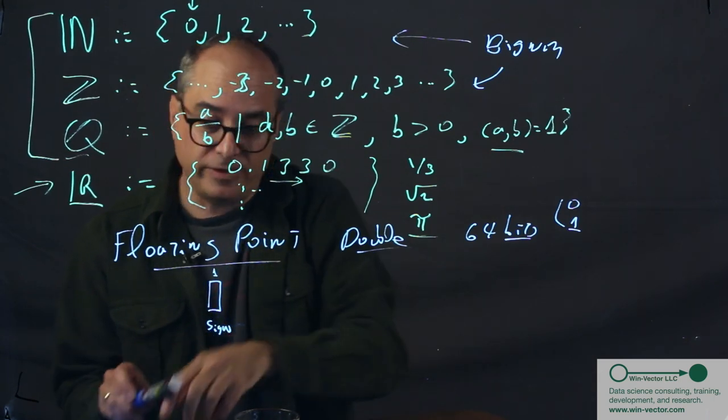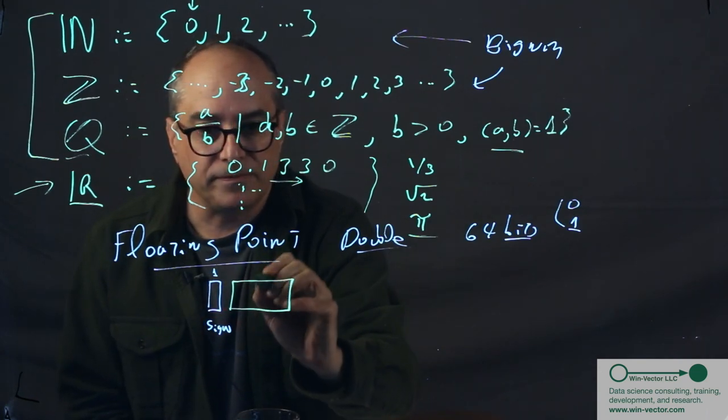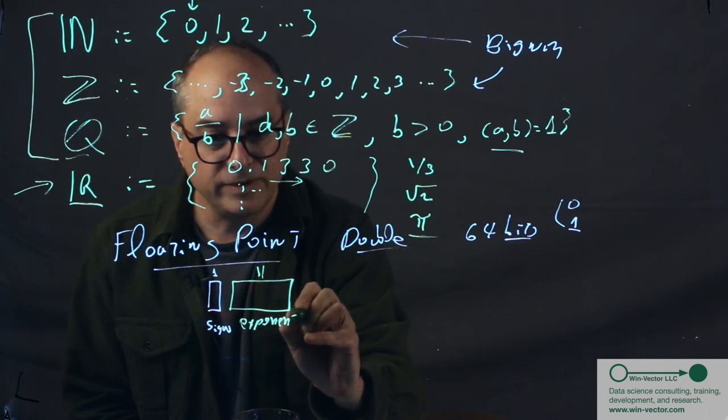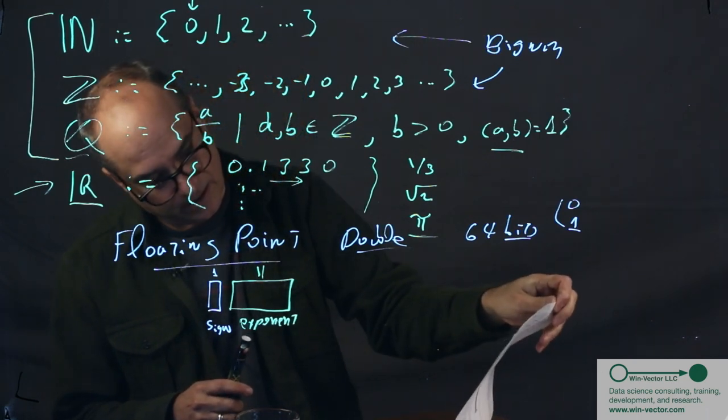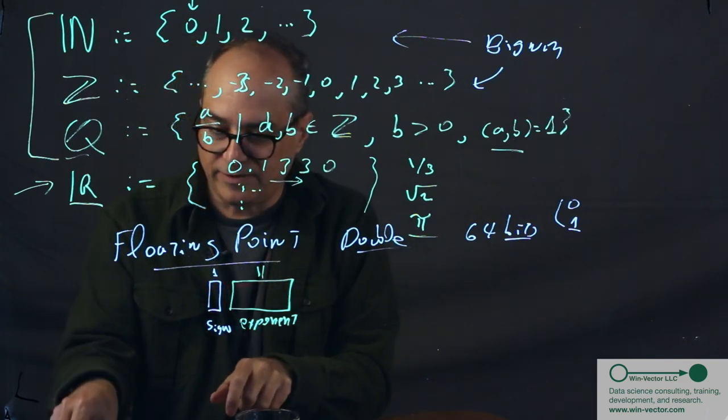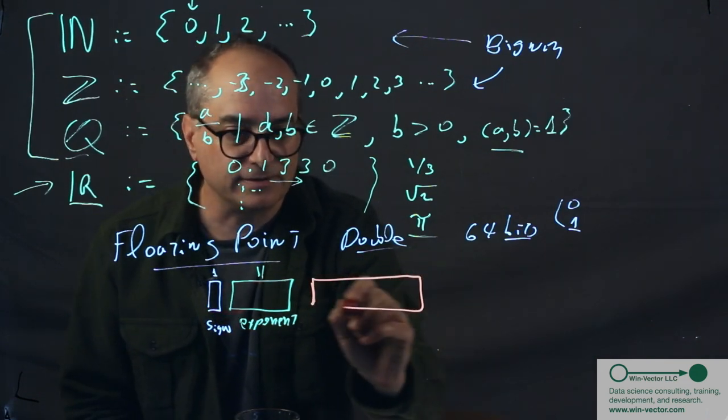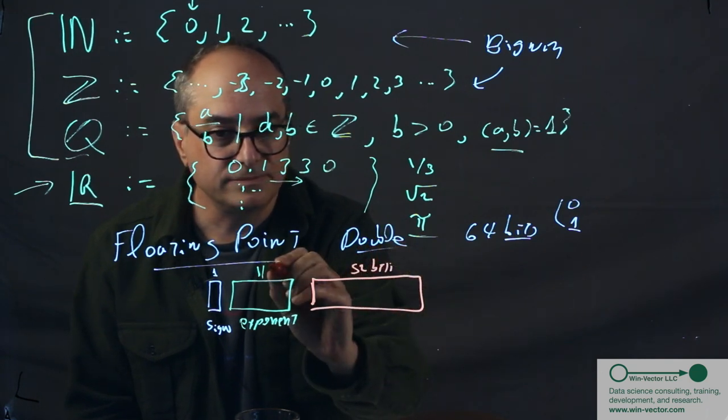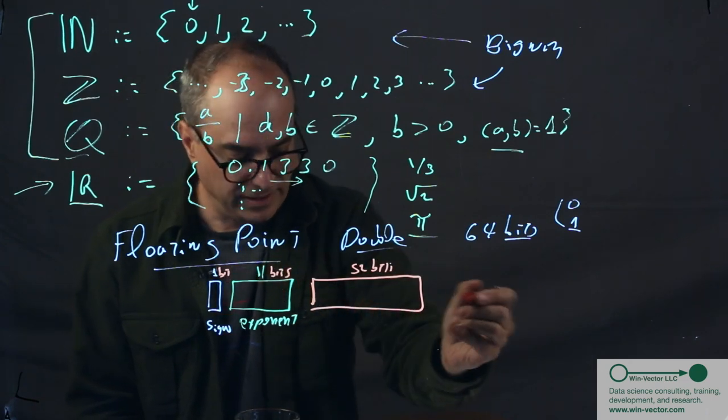So that represents whether the number is positive or negative. The next 11 bits are called the exponent. This has an IEEE specification. I think it's IEEE 754, which has several different variations. And the last set of bits is called the fraction. 52 bits. And this is called the fraction.